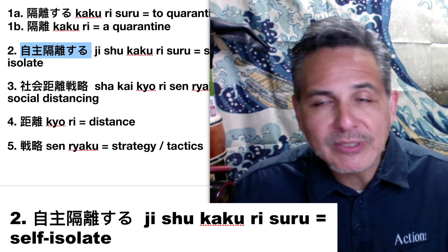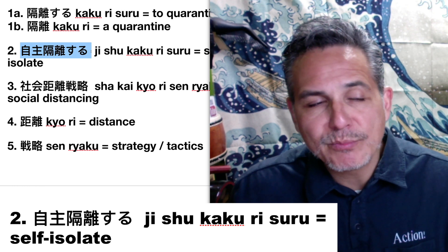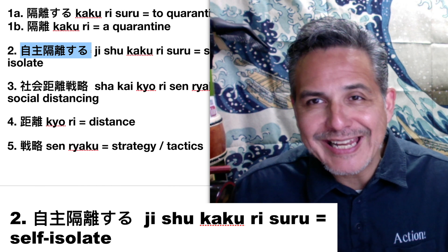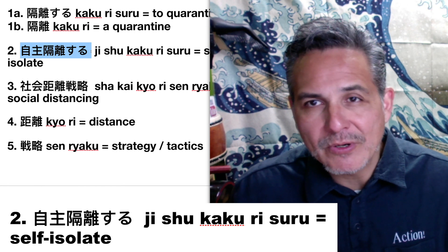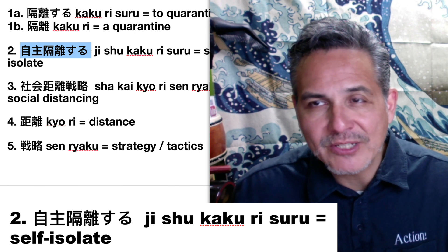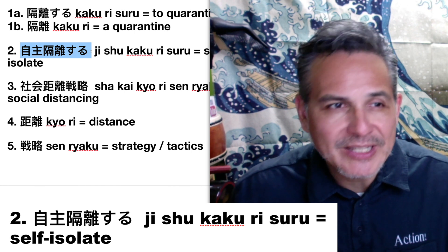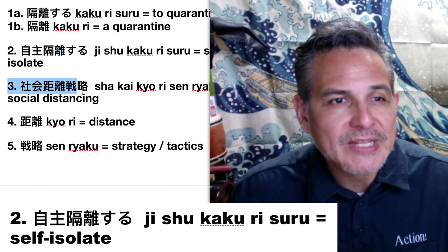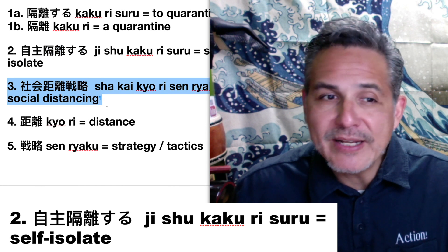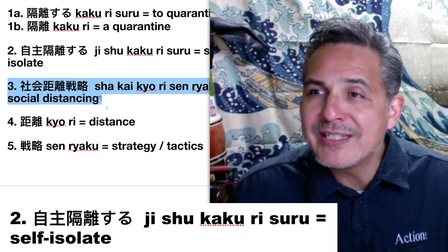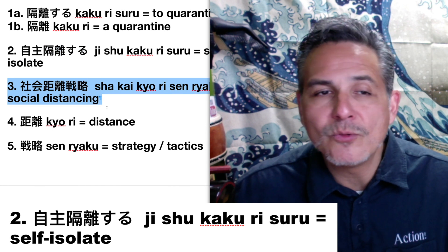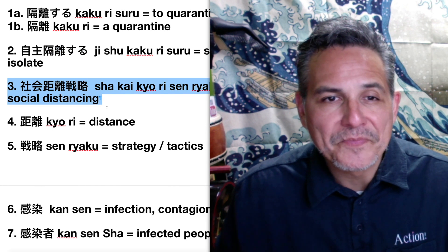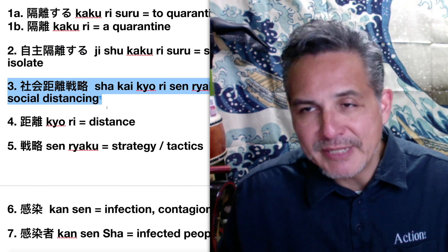Remember, language is basically getting your mouth to remember how to pronounce these, so just repeat these a billion times until you can do it. Number three: the word we're seeing a lot in western media now is social distancing.